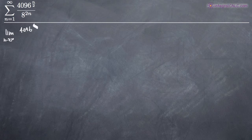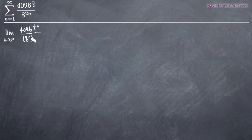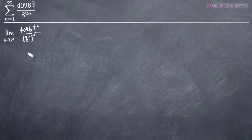So we're going to simplify as much as we can. We'll write the limit as n approaches infinity. In the numerator, instead of 4096 to the n over 2, we'll write it as 4096 to the 1/2 times n, which is the same thing. In the denominator, instead of 8 to the 2n, we'll write it as 8 squared, that whole thing raised to the n power. These are just laws of exponents from algebra — 8 to the 2n is the same as 8 squared raised to the n power.